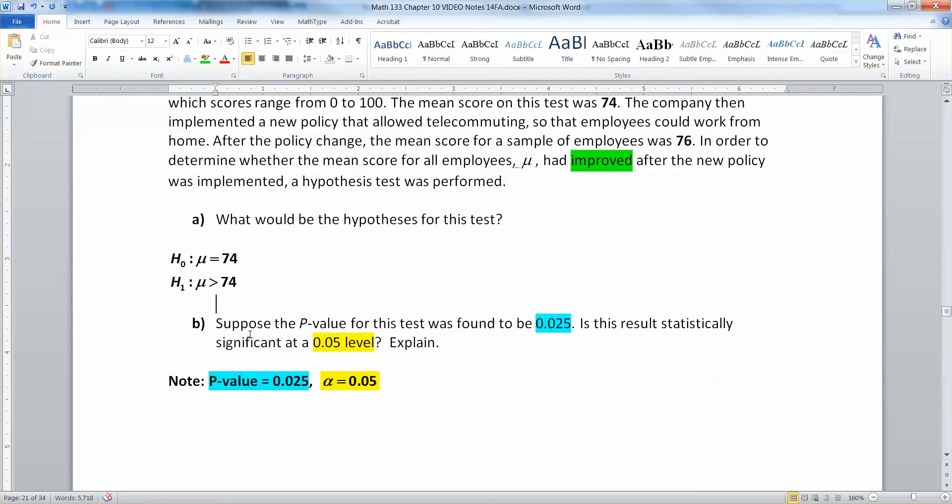Suppose the p-value for this test was found to be 0.025. Is this result statistically significant at the 0.05 level? Now, 0.05 level, when they say that, what they're saying is that α = 0.05. And the p-value is 0.025.